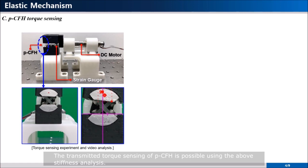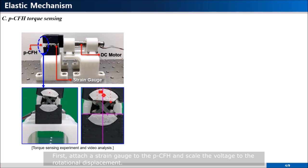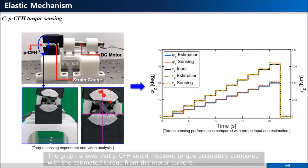Transmitted torque sensing of PCFH is possible using the above stiffness analysis. First, attach a strain gauge to the PCFH and scale the voltage to the rotational displacement. Then, with a non-linear relationship between G-axis rotational displacement and torque, transmitted torque could be calculated using rotational displacement. The graph shows that PCFH could measure torque accurately, compared with the estimated torque from the motor current.